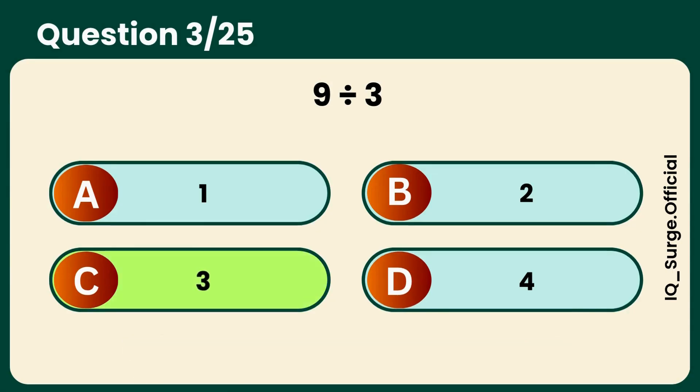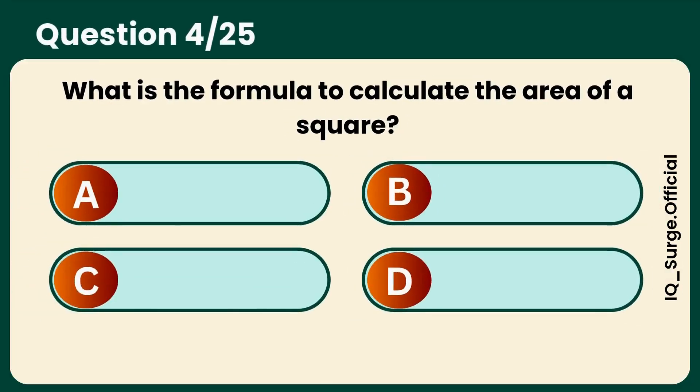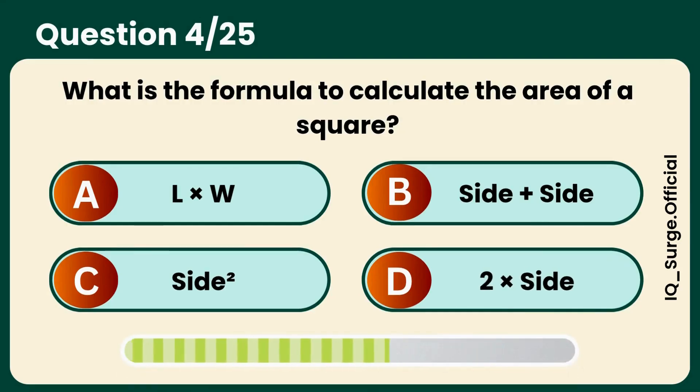Divide and conquer. What is the formula to calculate the area of a square? Sharp memory. That's side squared.